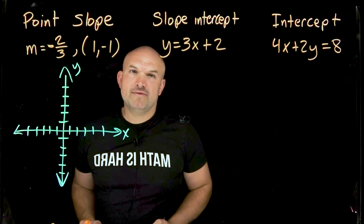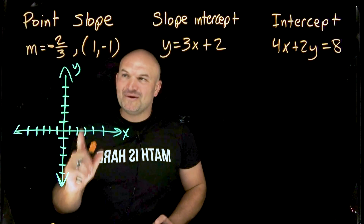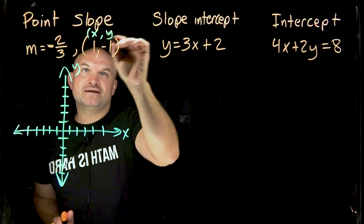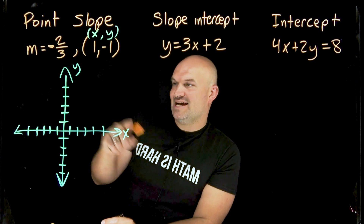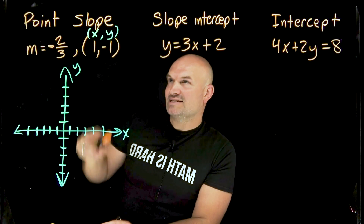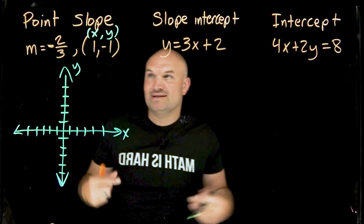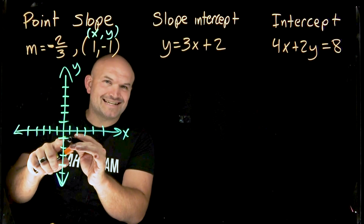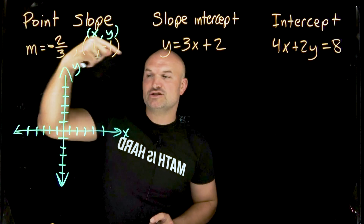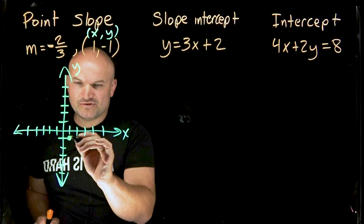First, identify the point. If you don't know how to graph a single point, make sure you practice that first. Points are labeled as an x and y coordinate. The first number tells you where to go on the x-axis — positive one means one unit to the right. The y coordinate tells you where to go on the y-axis — negative one means down one unit. Together, that single point is plotted at (1, -1).